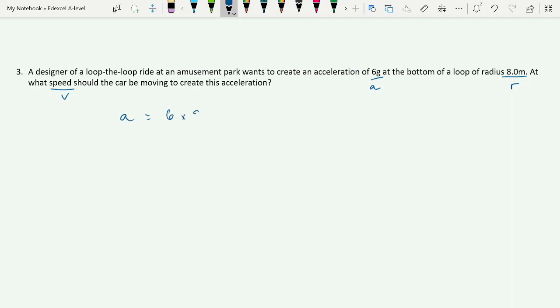Okay, now we have our A, we have our R, and we want V. Again, we have a choice of equations, but let's go for A is equal to V squared over R. And if we rearrange that by cross-multiplying, we will get V squared is equal to AR, which means V is equal to the square root of AR. And now we just put our numbers in. That's going to be the square root of 58.86 times 8, giving us an answer of 21.7 meters per second. And that is how it's done.